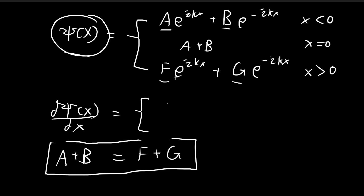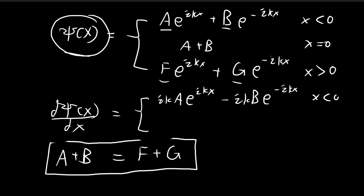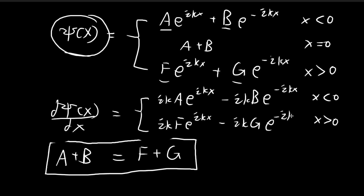Differentiating psi(x): for the region x smaller than 0, the derivative is ik·A·e^(ikx) minus ik·B·e^(-ikx). The derivative is not needed exactly at x = 0, so we can ignore that point. For x larger than 0, the derivative is ik·F·e^(ikx) minus ik·G·e^(-ikx).